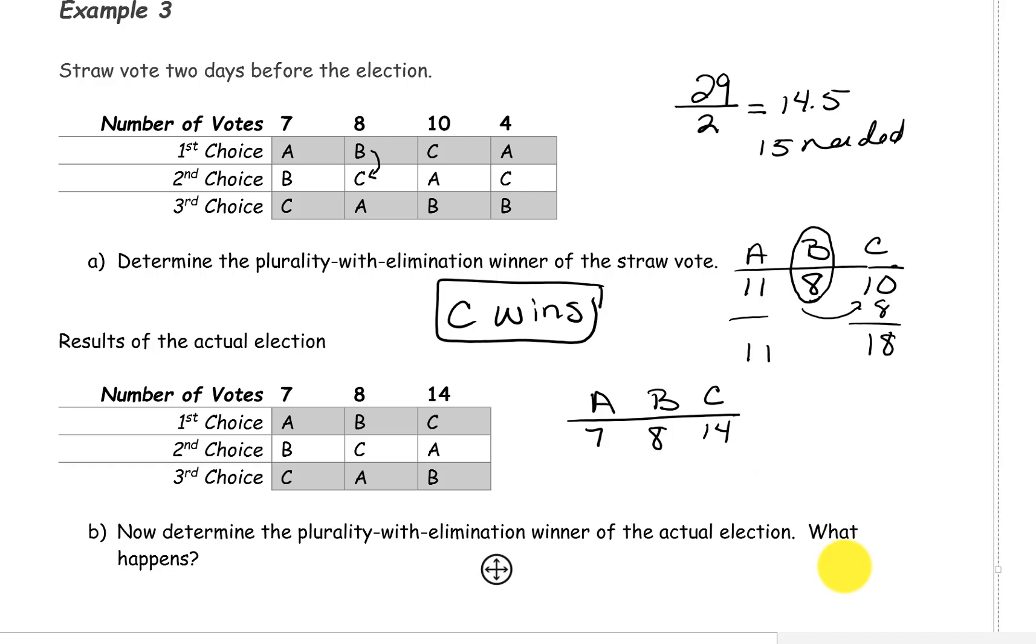Candidate C is only one away from a majority, but we still don't have a majority, so we need to eliminate the candidate with the least number of first place votes, and that's Candidate A. We can see from our preference schedule that the votes for A are now going to be passed along to B. So now B has 15 votes and C only 14. B wins.